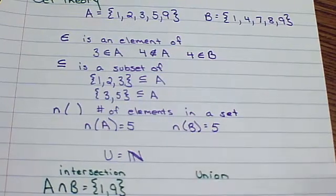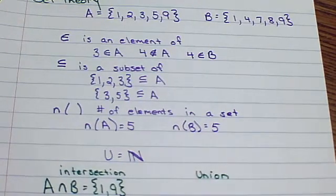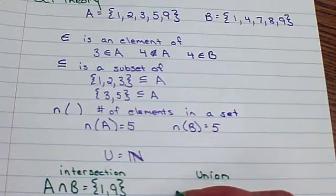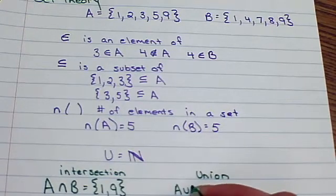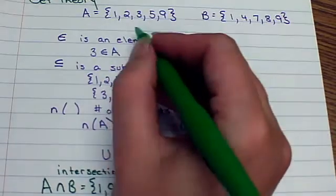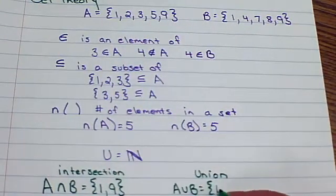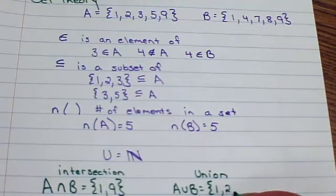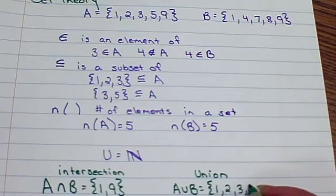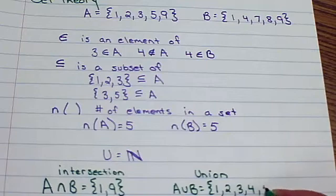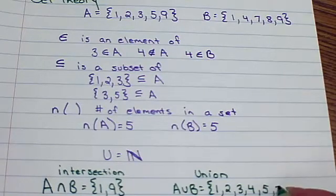Union would be taking all of one set and combining it with the other set. So the union of A and B would be everything that's in A and everything that's in B. And we usually do write them in order. So 1, 2, 3, 4, 5. We need to put down a 7, an 8, and a 9.